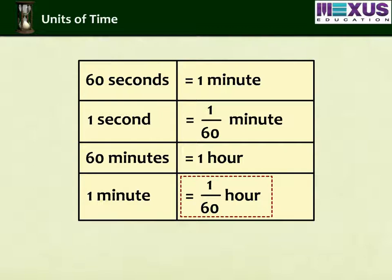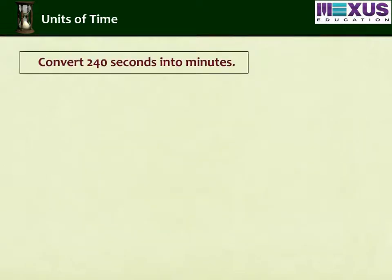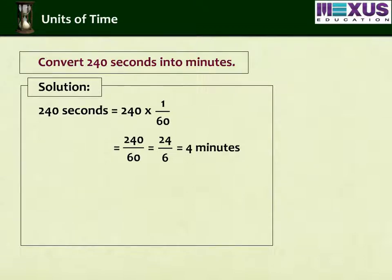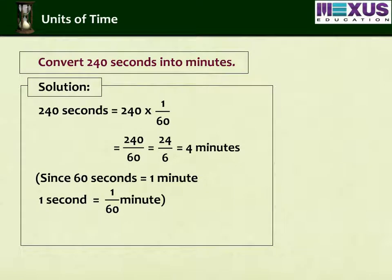Let us see an example which converts seconds into minutes. 240 seconds is equal to 240 into 1 upon 60, which is 240 upon 60, that is equal to 4 minutes. Since 60 seconds equals 1 minute, 1 second equals 1 upon 60 minutes, therefore 240 seconds equals 4 minutes.